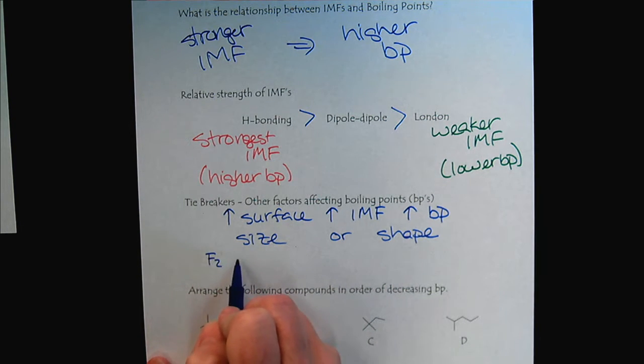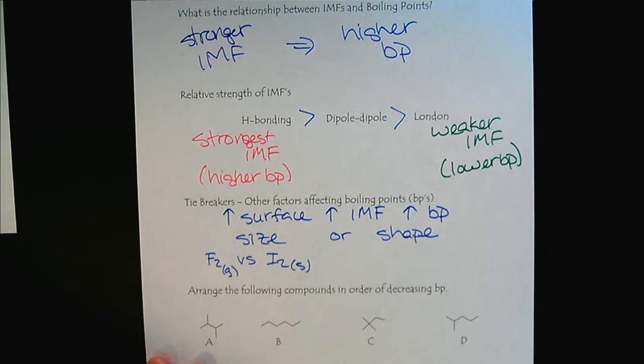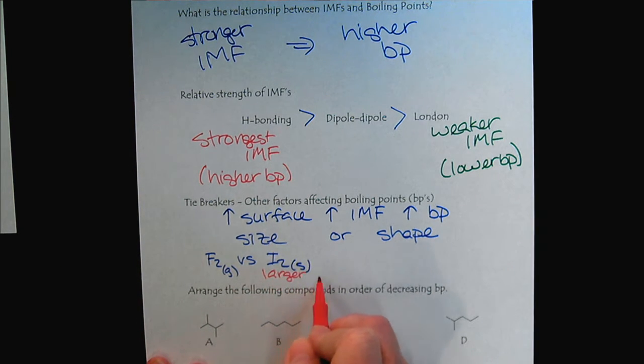If we look at fluorine versus iodine, this is a gas, and this is a solid. And the reason for that is because the iodine has the larger size.